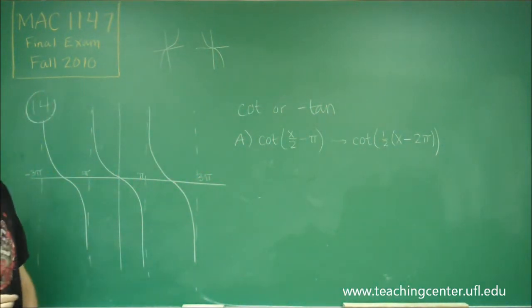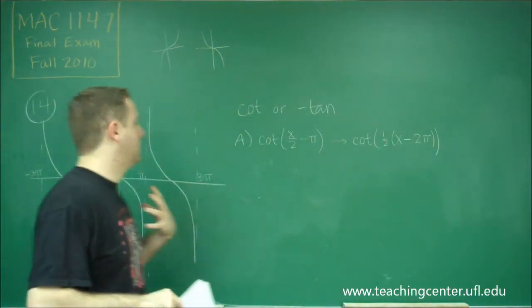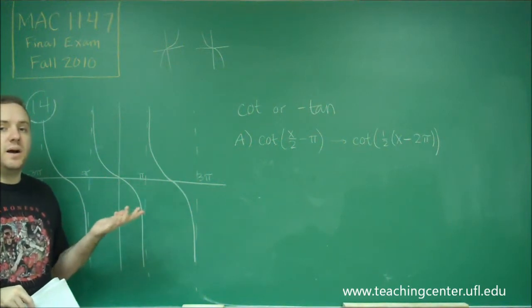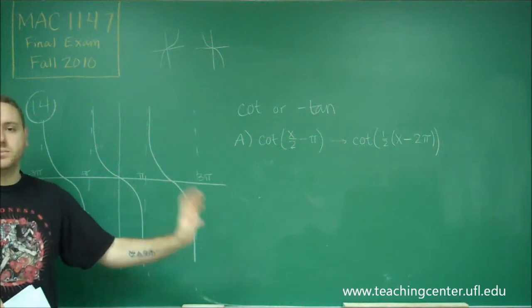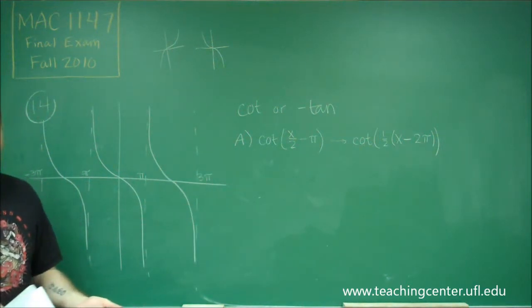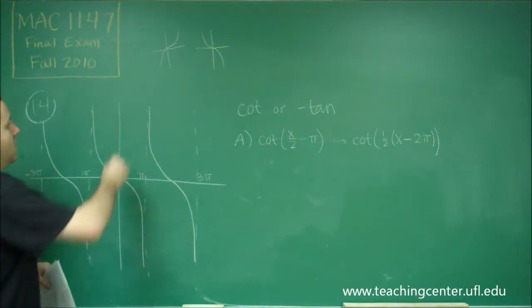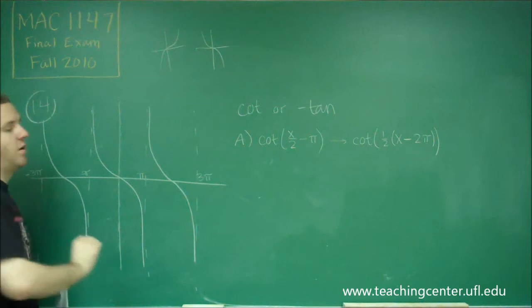The problem with that is that that means that we are shifted 2π, but shifting 2π when you have a period of 2π doesn't do anything. You would just be shifting to the next period in the graph and it would look the same. So this one cannot be correct because our cotangent graph should normally have an asymptote right on the y-axis.